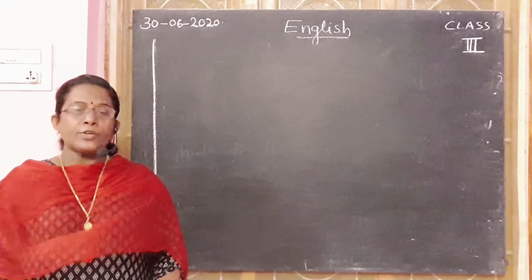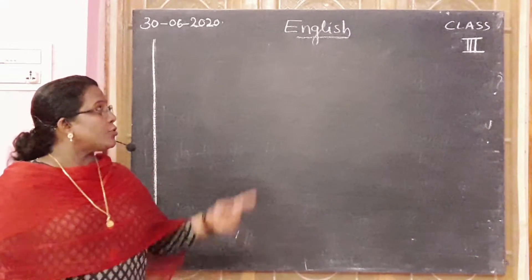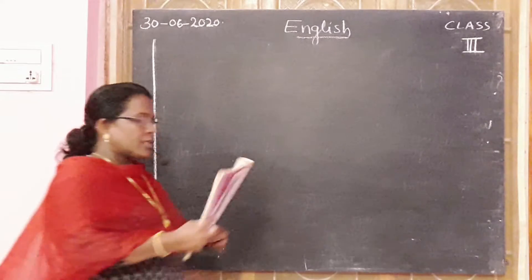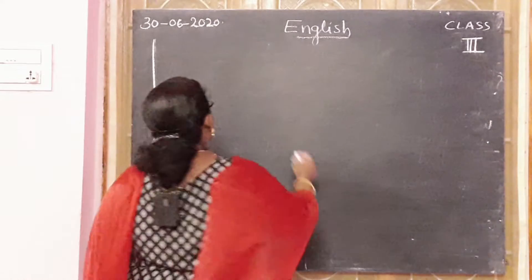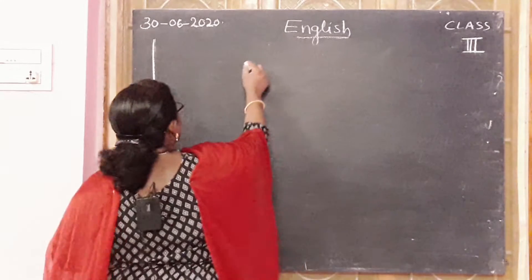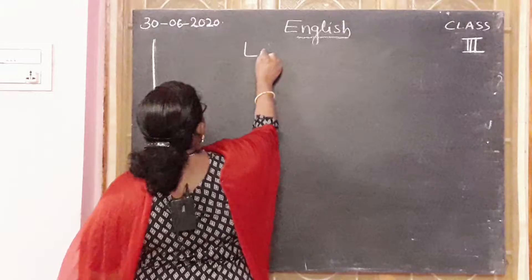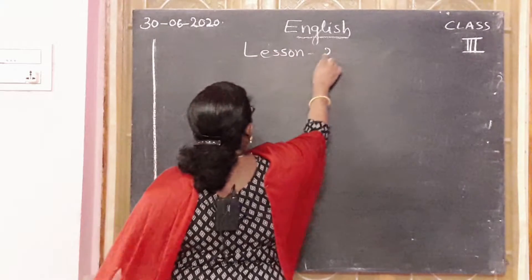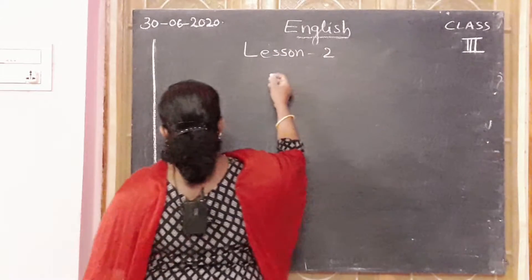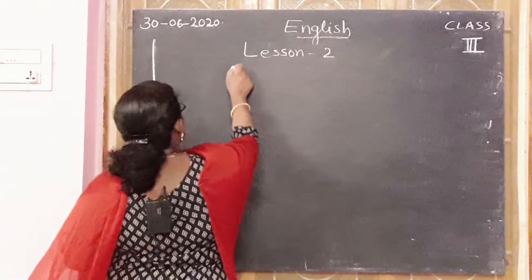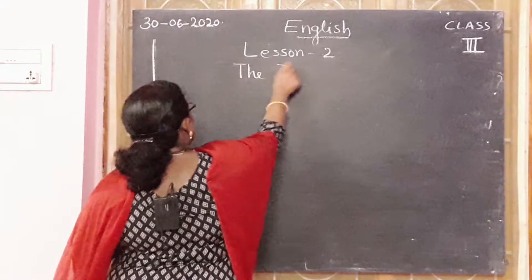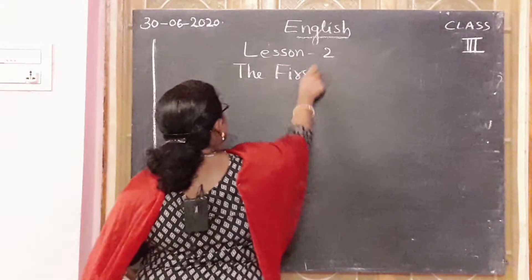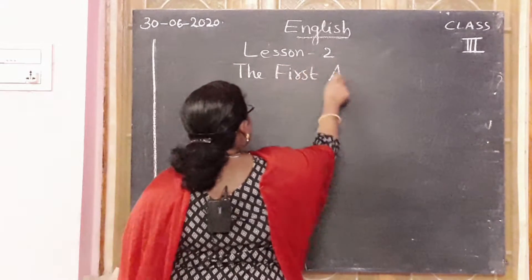Okay, all of you, take your third class students. Take your English classwork book. Heading: Lesson 2 — The First Aeroplane.